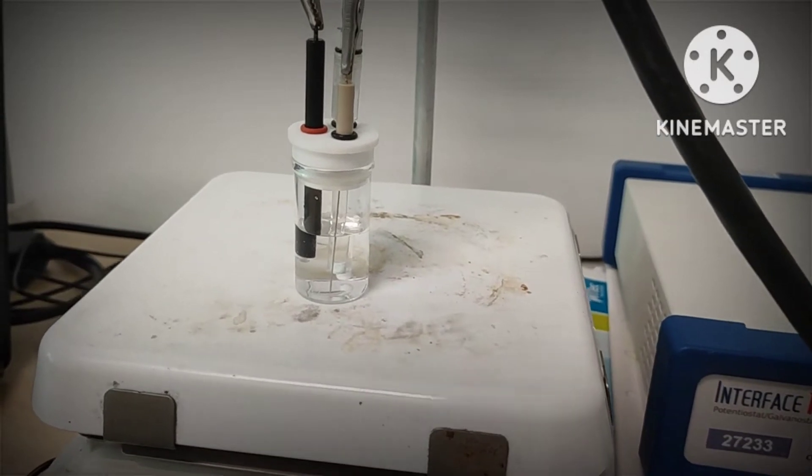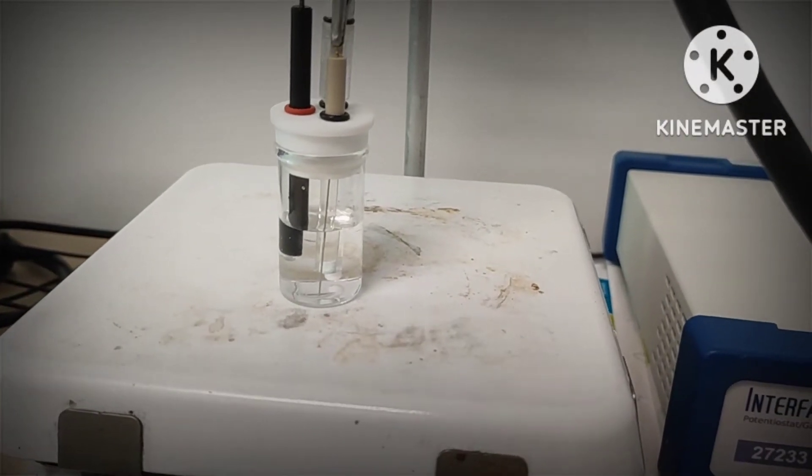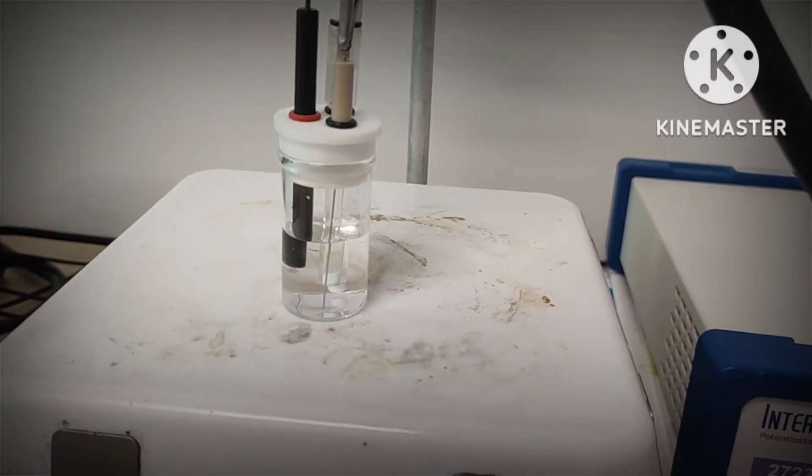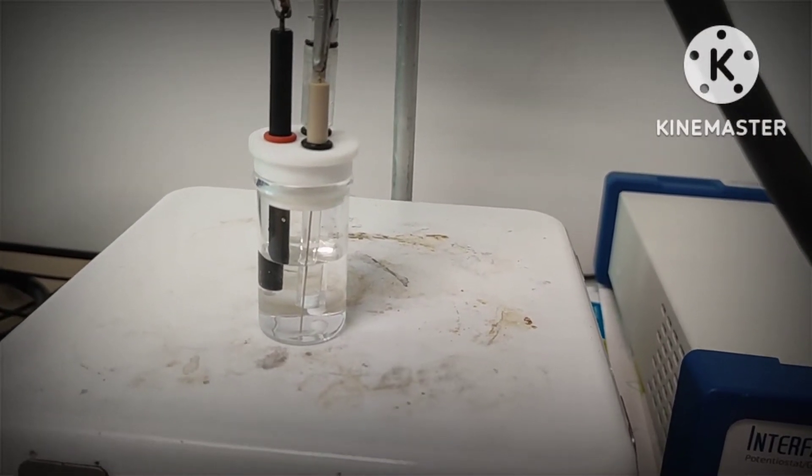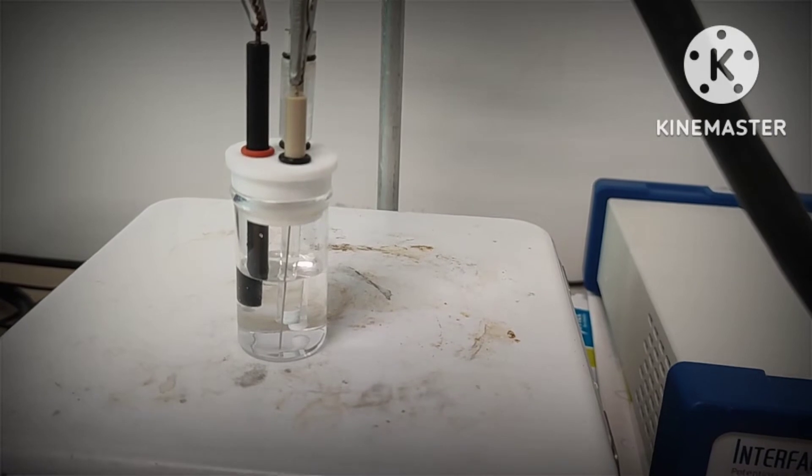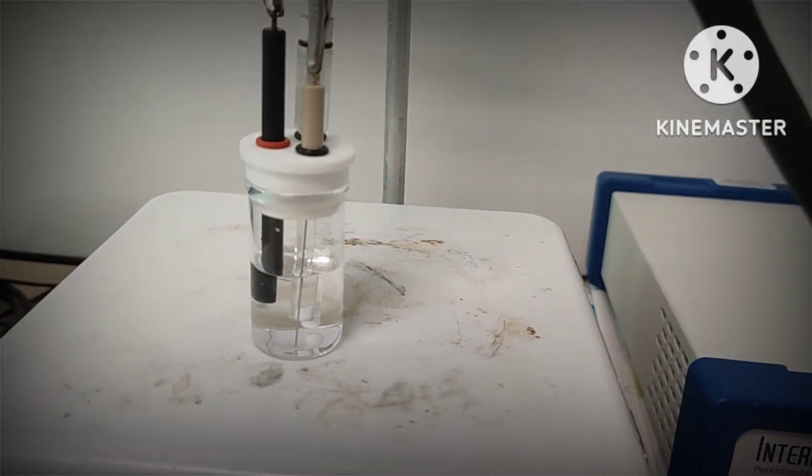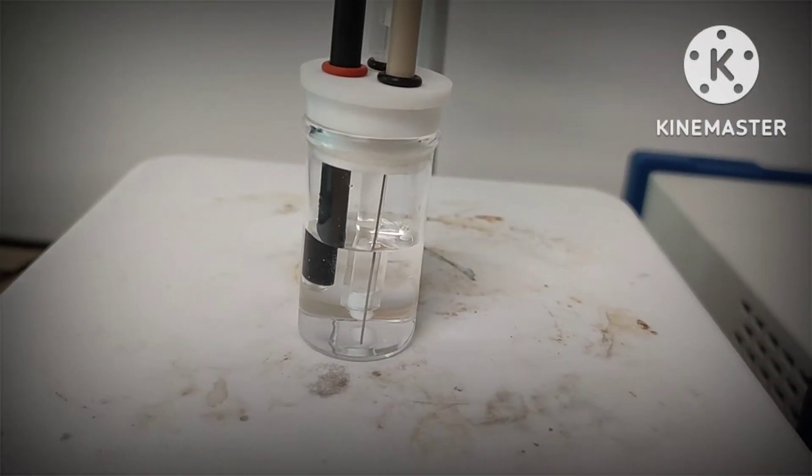The solution you can find here is 1 molar sulfuric acid. We have here the counter electrode which is a platinum wire, and also the reference electrode, I think SCE, the saturated calomel electrode. The black one is the GCE electrode as a working electrode.